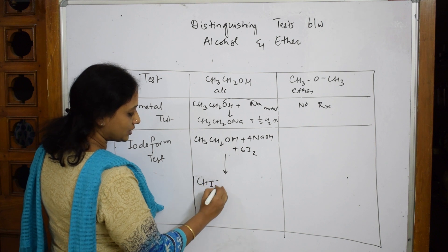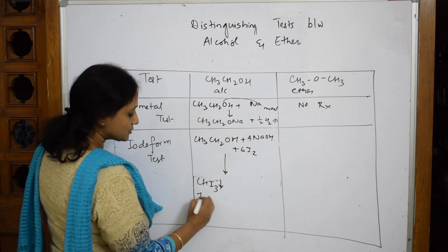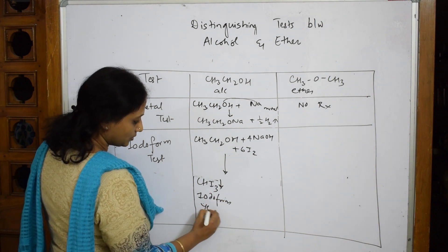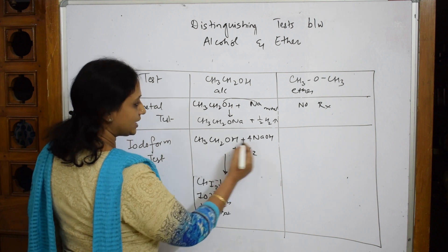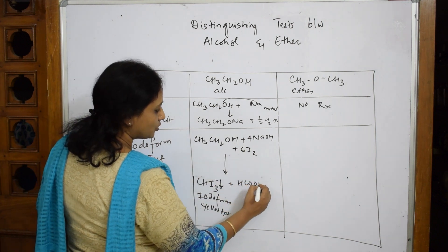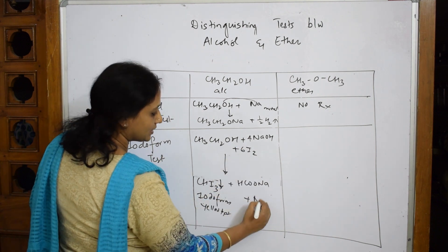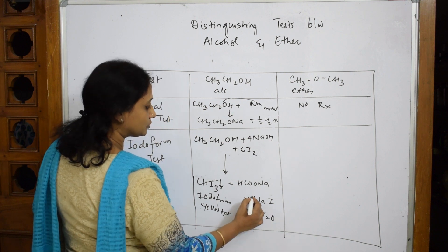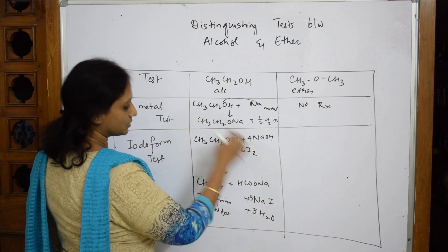What do you get? Four products: CHI3 iodoform is the first compound, which is a yellow precipitate. Along with that, I'm going to get HCOONa plus sodium iodide which I explained already, plus water. So five moles of this and five moles, because six here for this one.